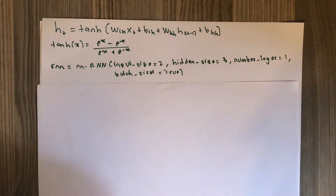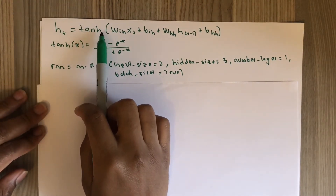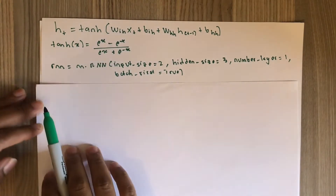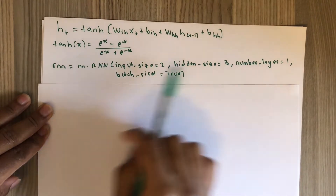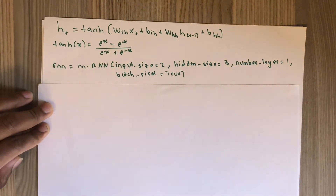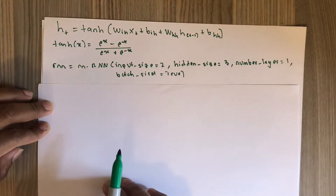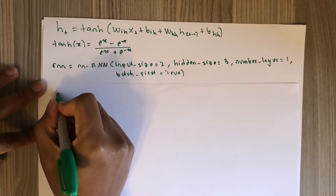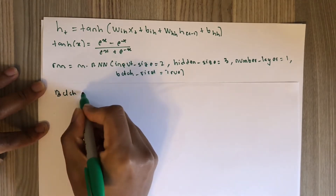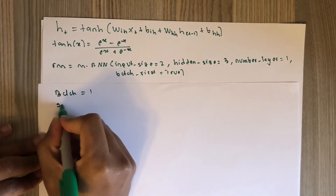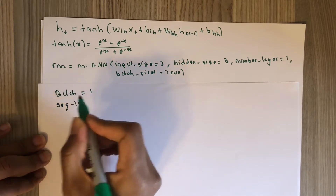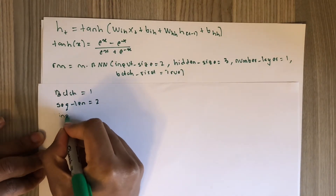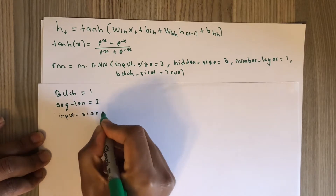This is the formula used for RNN. It also has a nonlinear function — the tanh function. This is the code we use on the computer to create the simple RNN. Before we continue, it's good to write down the given information. The batch is one. The sequence length — this depends on your application — is two. Sequence length is literally the number of inputs. And the input size is two.